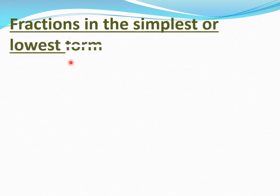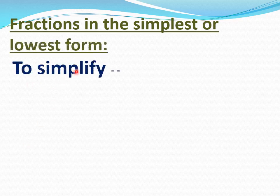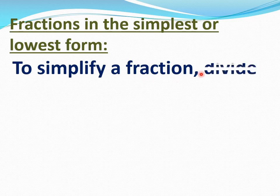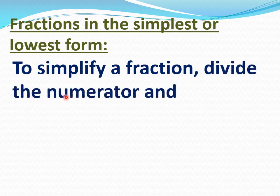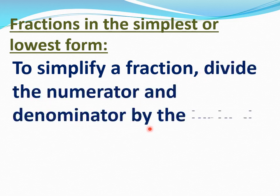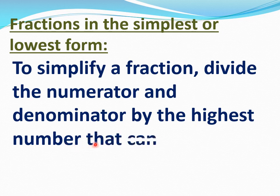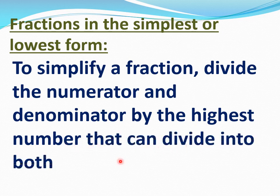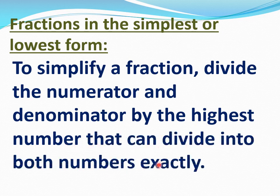Fractions in the simplest or lowest form. To simplify a fraction, divide the numerator and denominator by the highest number that can divide into both numbers exactly. If you want to simplify a fraction, we divide the numerator and denominator by the highest number that can exactly divide both.